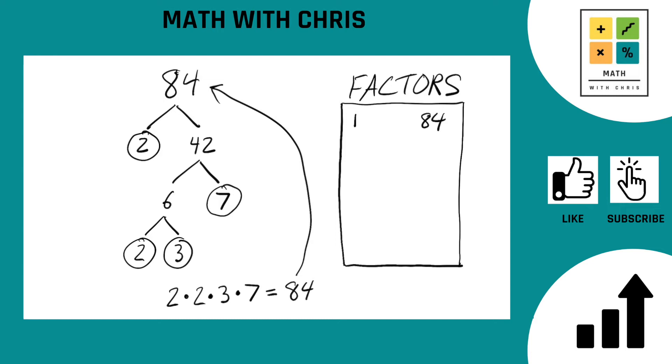So now we're going to bank all the prime factors we found. We found a 2, we found a 3, and we found a 7. And any numbers we hit along the way in our factor tree also get banked. We've had a 42 here, and we also got a 6. So we've got to bank both 42 and 6.